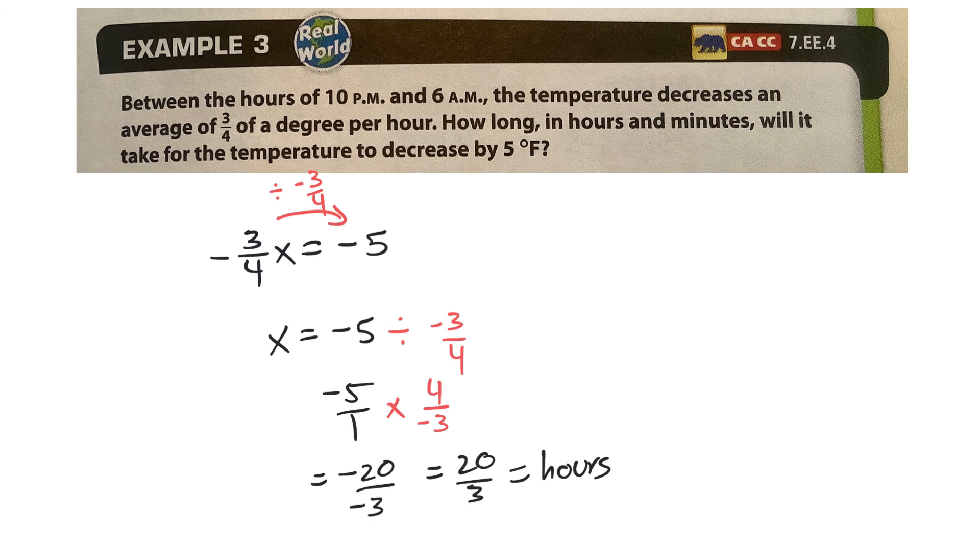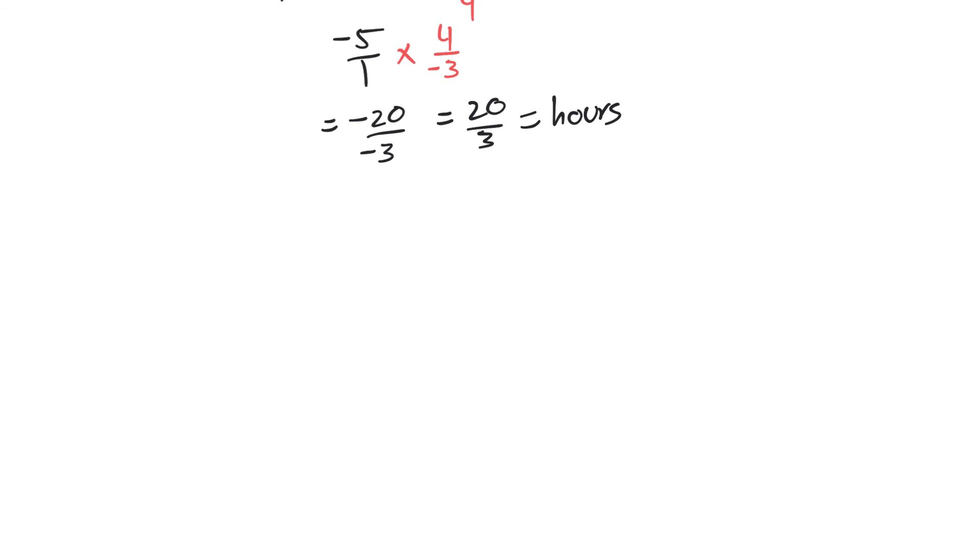Well, if it's 20 over three hours, let's see. I can say that 20 over three is six and 2/3. So this is the hours. And this is the part of an hour, which we call a minute. So let's figure out 2/3 in minutes.